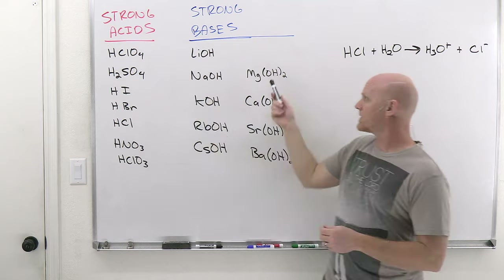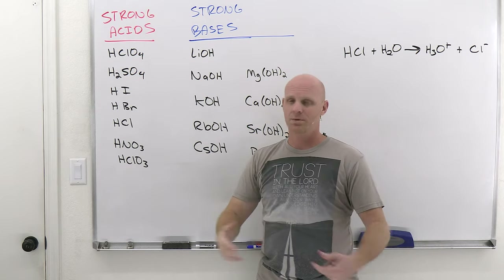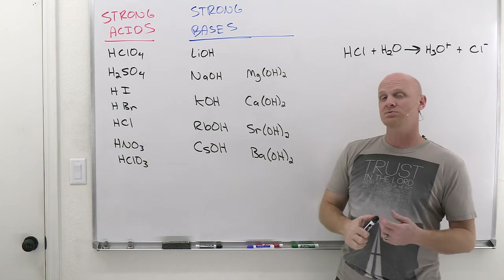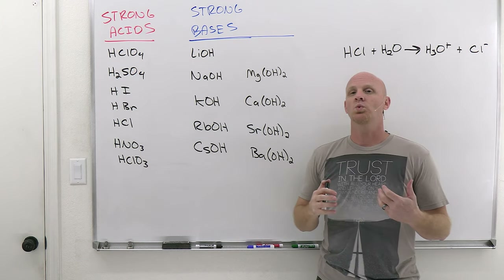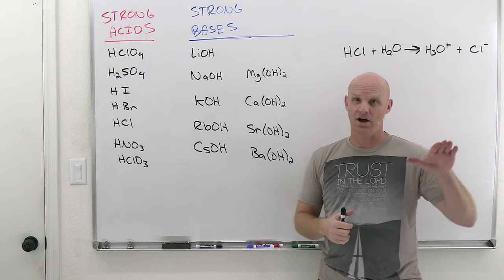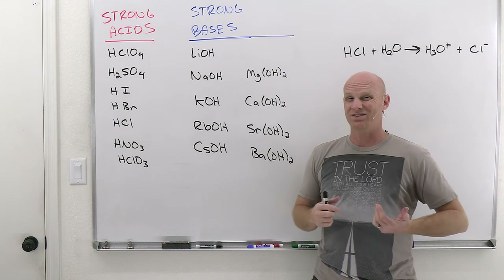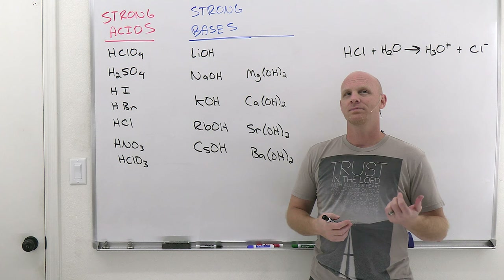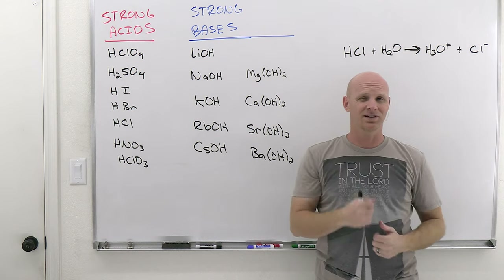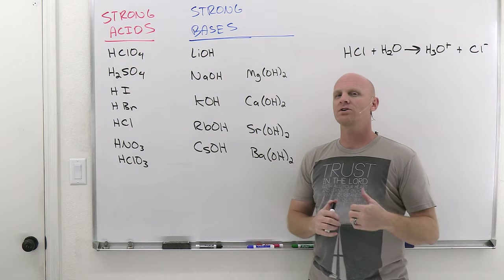H2SO4 is worth revisiting: it donates that first H 100%, but the second one is only weakly acidic and only partially dissociates. Strong acids dissociate effectively 100%; weak acids dissociate far less — partial dissociation, usually less than 5%, and quite often much less, like 0.01%. It's concentration-dependent: for a weak acid, the higher the concentration, the less it's going to dissociate; the lower the concentration, the more it will dissociate.